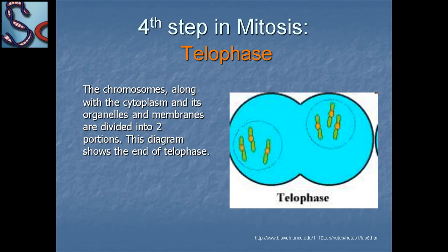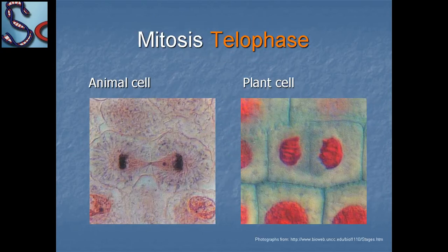The fourth step is telophase. The chromosomes along with the cytoplasm, organelles, and membranes are divided into two portions. This diagram shows the end of telophase, in which a new membrane is formed and two nuclei are created — shown here for both animal and plant cells.